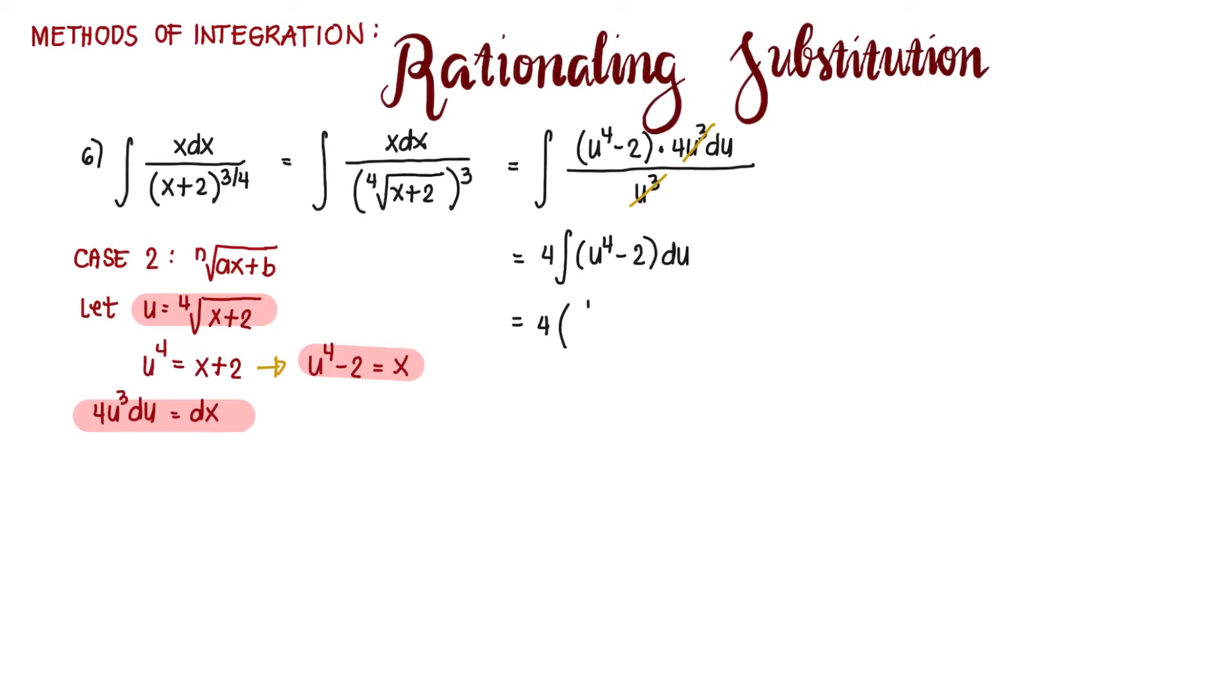So 4 times (1/5)u^5 minus 2u plus C. We distribute, and u is the 4th root of x plus 2. So that's (4/5)(x+2)^(5/4) minus 8(x+2)^(1/4) plus C.